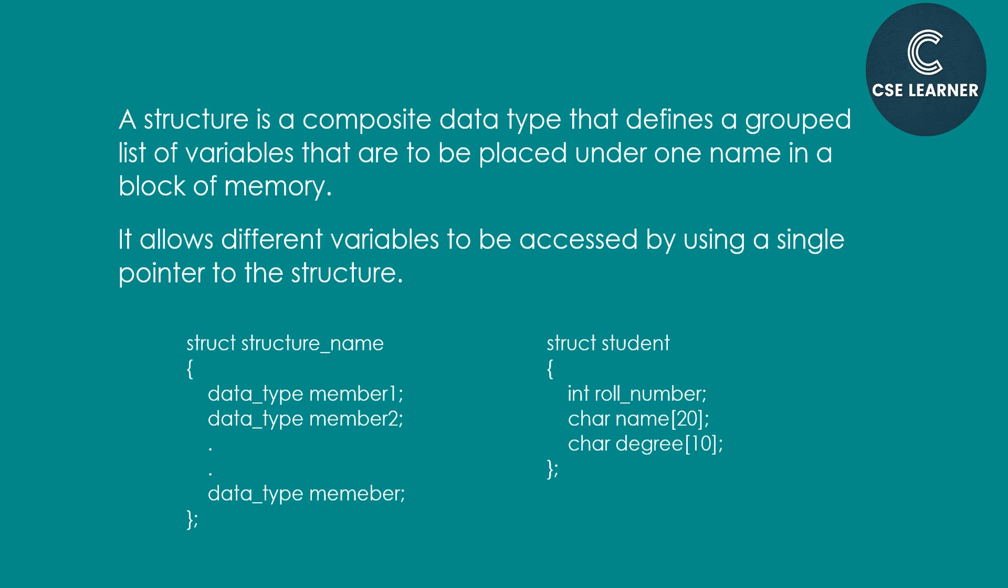The variables are: int roll_number, char name, and char degree. So roll_number is of int data type, and name and degree are both of char data type. We can use different data types of variables inside the structure. All variables are contained within the structure, and the structure is named 'student'.